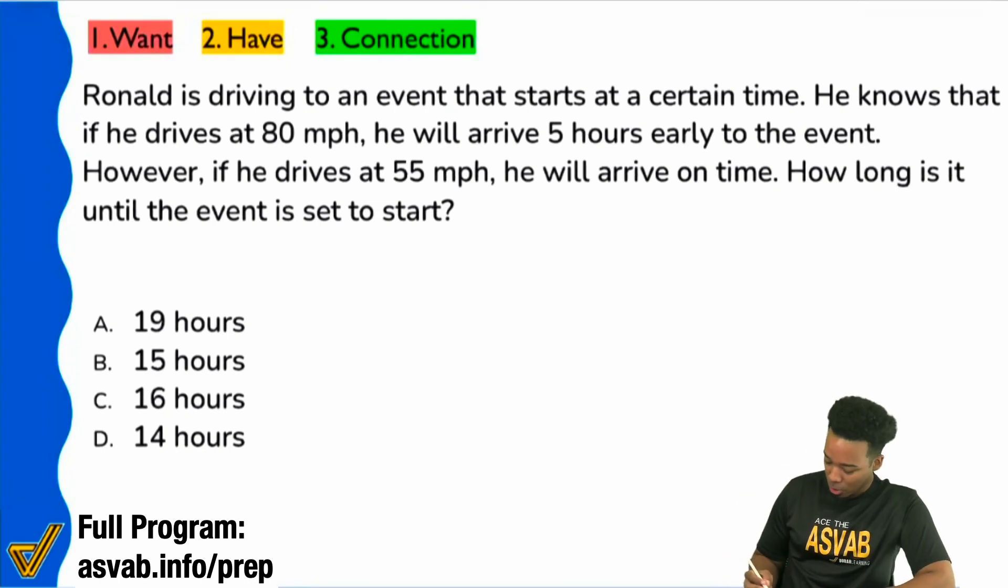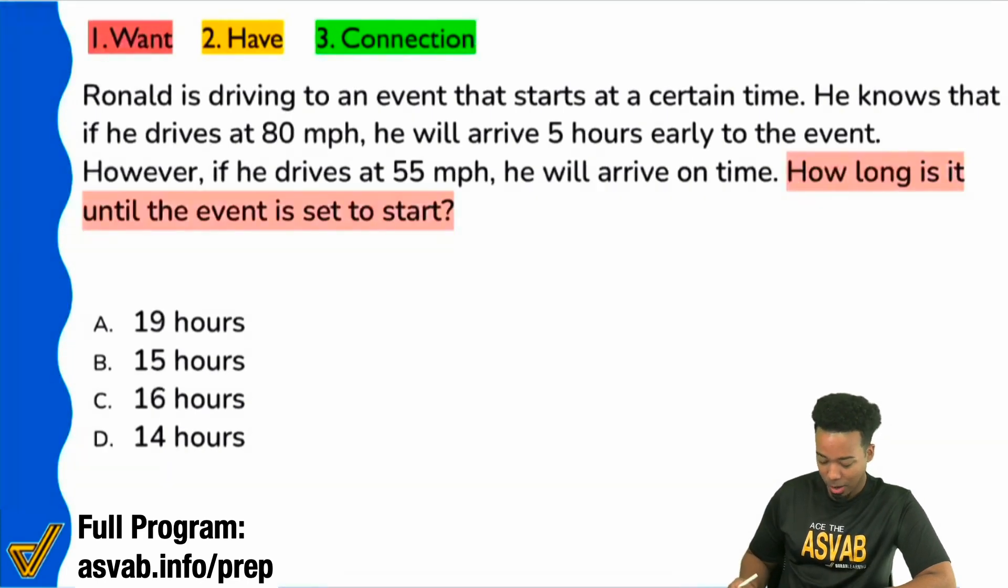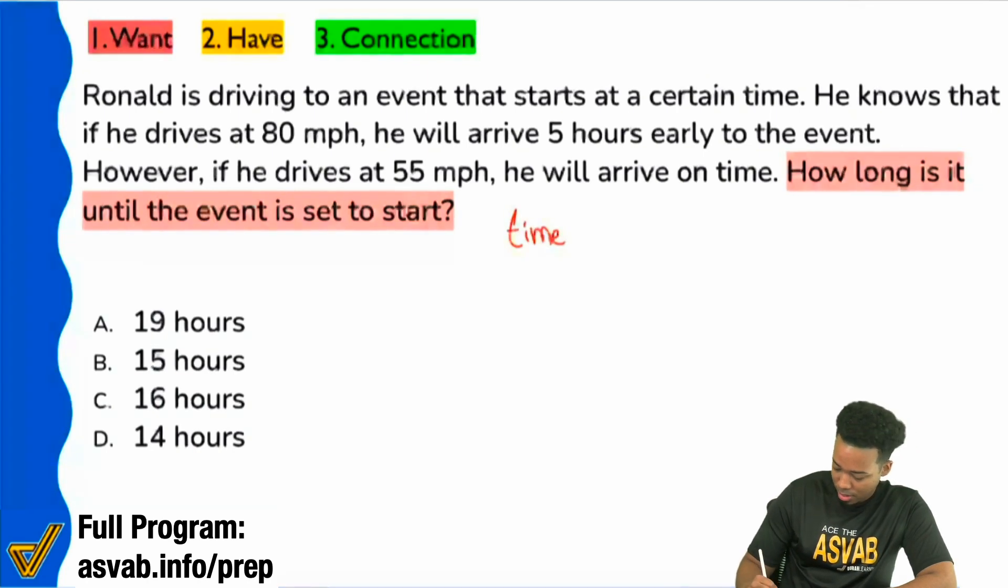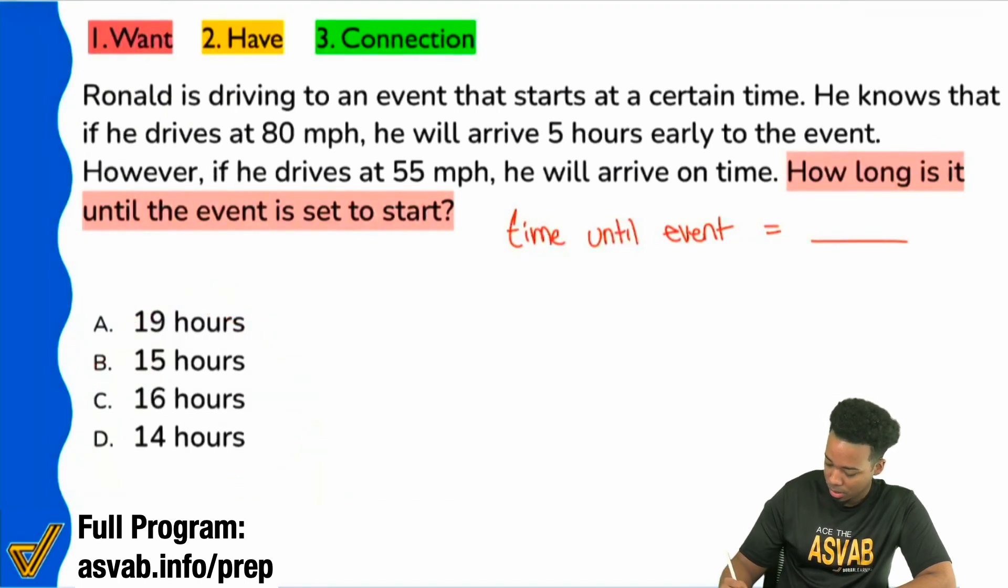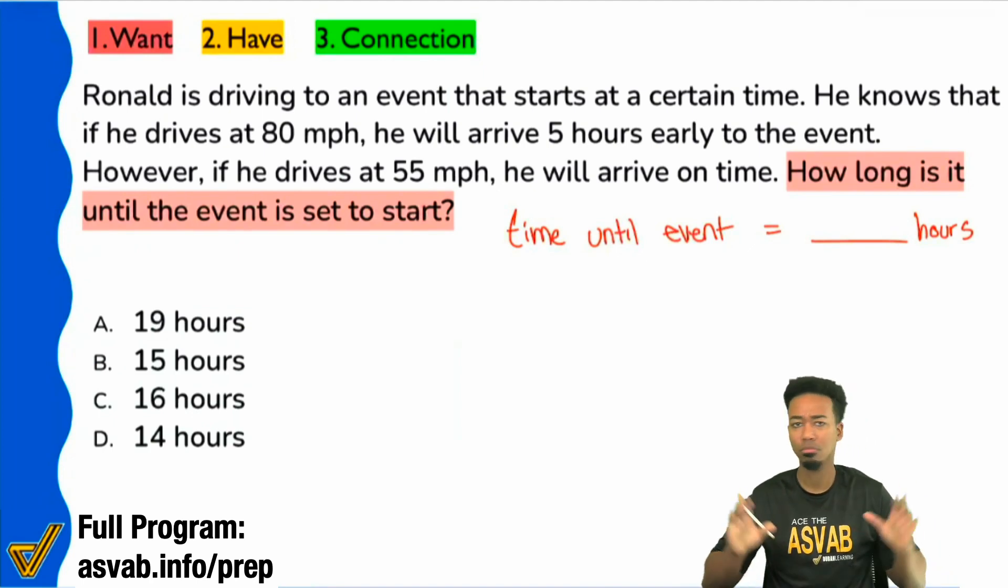Let's go ahead and get started with the question itself. Always start with the question. What is it that we want? We see here that it says, how long is it until the event is set to start? So what we're looking for is a time value. So I'm going to say time until event equals blank. And I'm looking at the answer choices, they all say hours. So we're looking for some number of hours. Super simple, right?